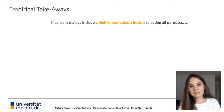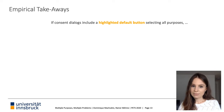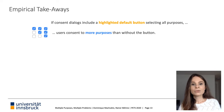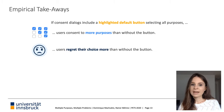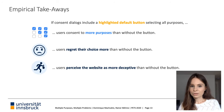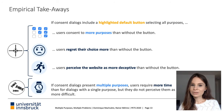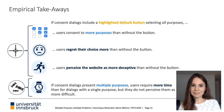To summarize the empirical takeaways, our results show that the highlighted default button which selects all purposes has several effects: first, users consent to more purposes; second, users perceive the website as more deceptive; third, users regret their choice more. These findings align with deception theory. Turning to the theory of choice proliferation, even though the number of choices significantly impacted response time, respondents did not perceive it as more difficult, indicating that most users can handle three different purposes without experiencing negative effects.